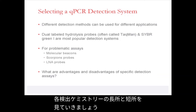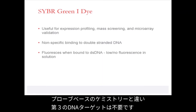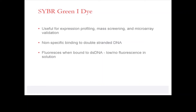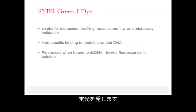What are the advantages and disadvantages of specific detection chemistries? The SYBR Green 1 dye is one of the most common and well-used detection chemistries of qPCR. It does not require the presence of a third DNA target, unlike probe-based chemistries. It is useful for expression profile analysis, mass screening, and microarrays. It is a non-specific dye that binds to double-stranded DNA and fluoresces when bound to double-stranded DNA.